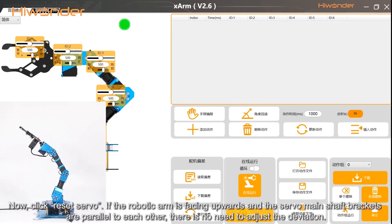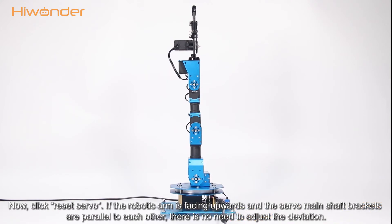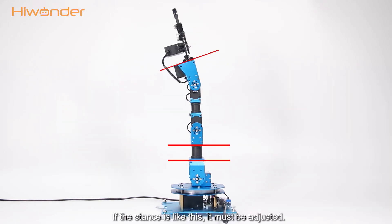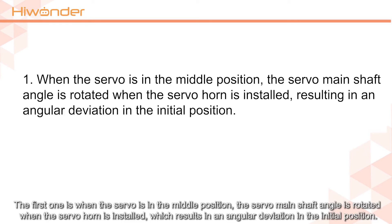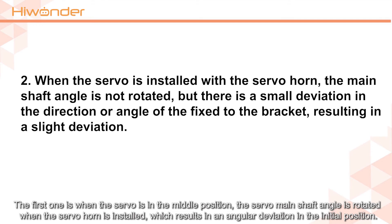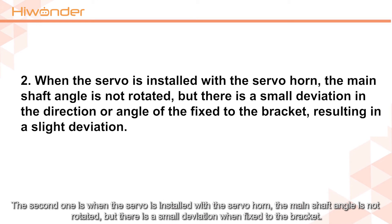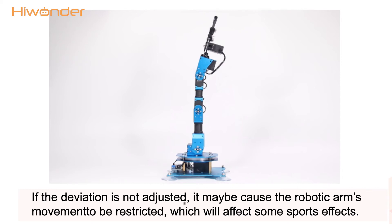Now click 'Reset Servo.' If the robotic arm is facing upward and the servo's main shaft brackets are parallel to each other, there is no need to adjust the deviation. If the stance is off, it must be adjusted. There are two main reasons why deviation is generated. The first is when the servo is in the middle position and the main shaft angle is rotated when the servo horn is installed, resulting in angular deviation in the initial posture. The second is when the servo horn is installed without rotation but there is a small deviation when fixed to the spline key, which may restrict the robotic arm's movement and affect some motion effects.